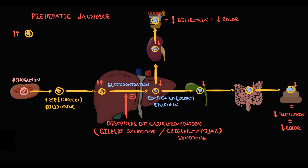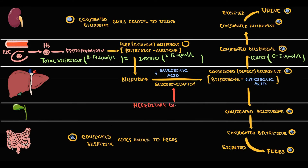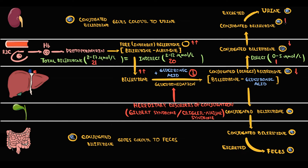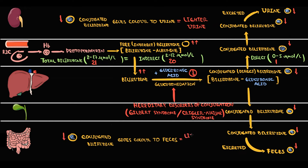So in this case also, the concentration of indirect bilirubin is higher than the concentration of direct bilirubin. In hereditary disorders of conjugation, glucuronidation occurs at a very low rate. As a result, the amount of free bilirubin increases — reaching 20, for example — and the amount of conjugated bilirubin decreases, becoming 1 for example. With decreasing conjugated bilirubin, excretion of bilirubin decreases, causing decreased bilirubin concentration in the urine — urine discoloration — and decreased bilirubin in the feces — discoloration of the feces.